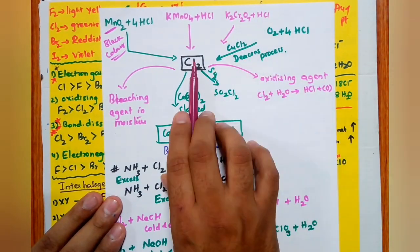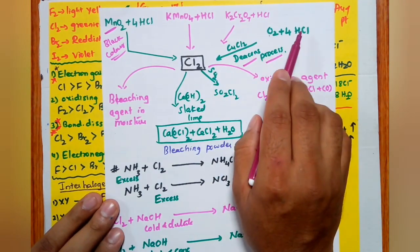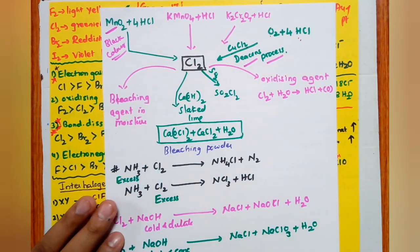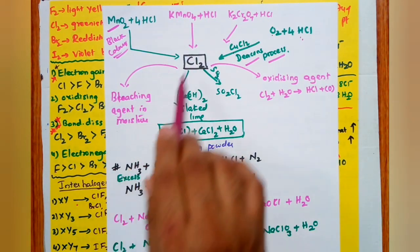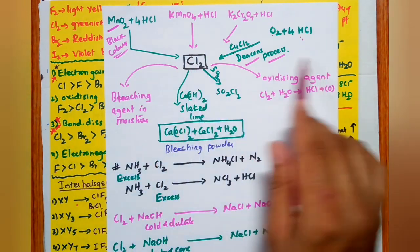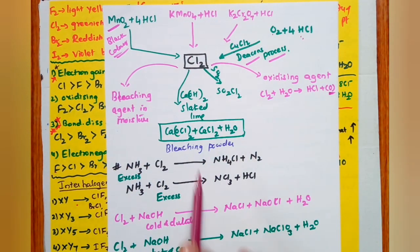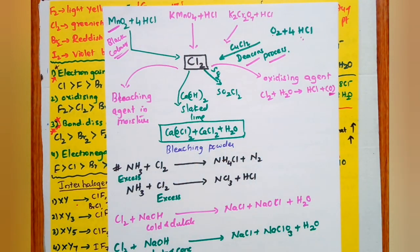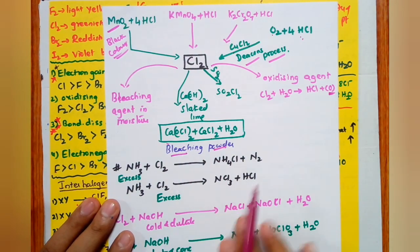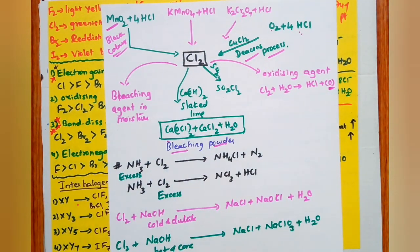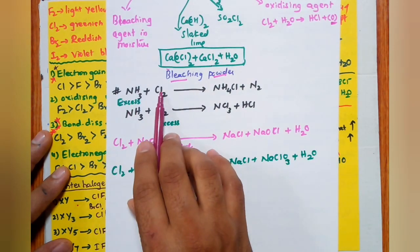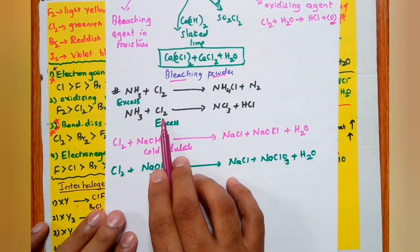Important Cl2 reactions: MnO2 (black solid) reacts with HCl to give Cl2; KMnO4 with HCl also gives Cl2; potassium dichromate oxidizes HCl to give Cl2; HCl is oxidized in the presence of CuCl2 catalyst to form Cl2. Cl2 acts as a bleaching agent in moisture because it acts as an oxidizing agent. Cl2 reacts with slaked lime Ca(OH)2 to form bleaching powder CaOCl2.